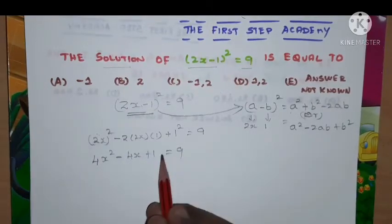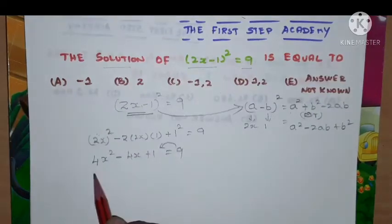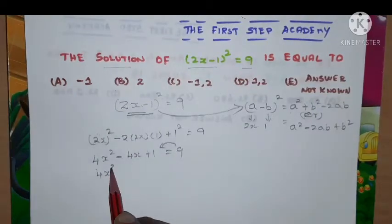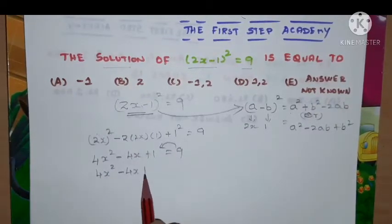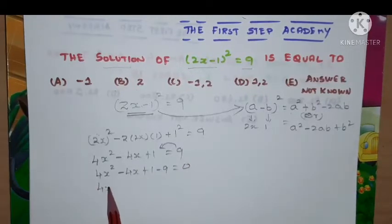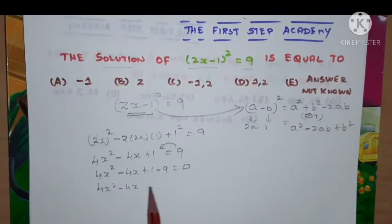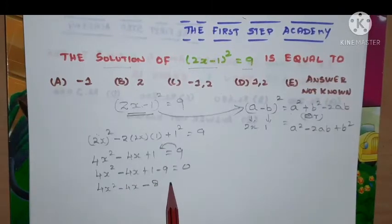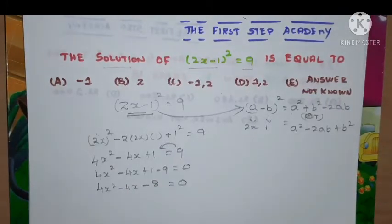Now 9 will come to this side hence will become negative. So 4x² - 4x + 1 - 9 = 0. So 4x² - 4x - 8 = 0.